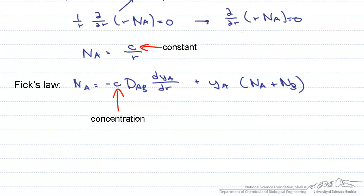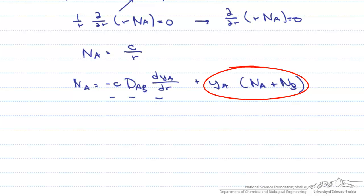Let's see if we can simplify this equation. We have our concentration, our diffusion coefficient, and the change in the mole fraction of A with respect to R. However, if we look at this term, this term actually goes to 0. It is not the fact that Y sub A is 0, that it is dilute.